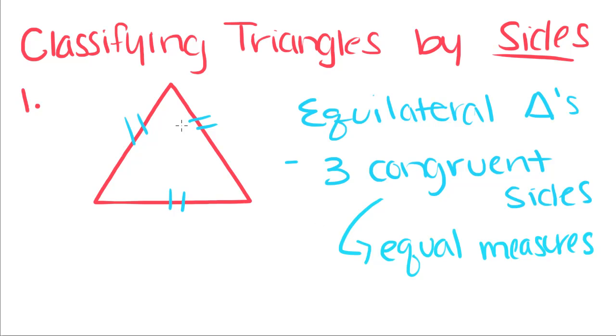You can't just say they look equal, so it's an equilateral triangle. You have to actually measure them or be told that the sides are equal.